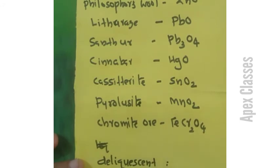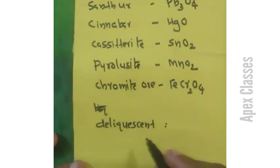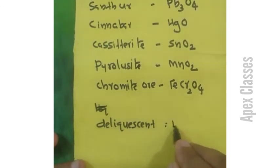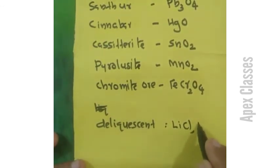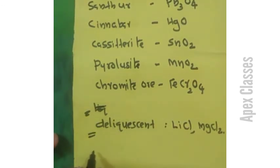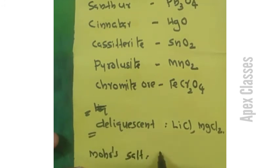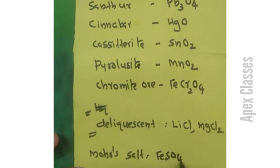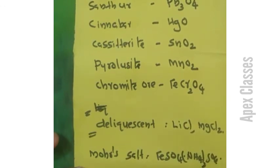Deliquescent compounds are compounds that easily absorb moisture from the atmosphere. Examples include lithium chloride and magnesium chloride. Mohr's Salt is FeSO4·(NH4)2SO4·6H2O — it is a double salt.